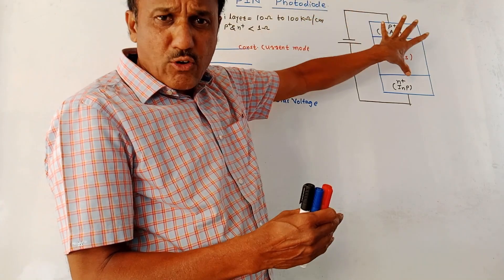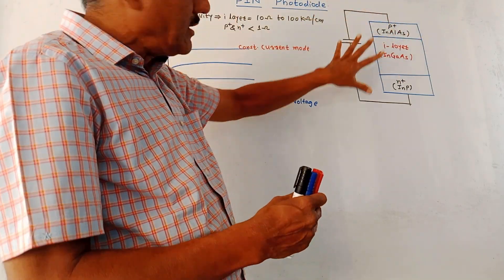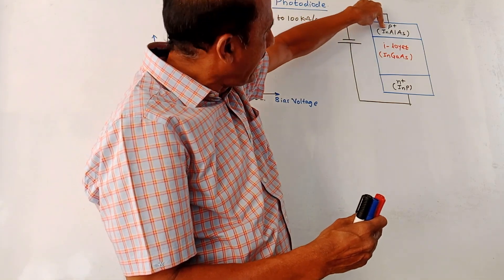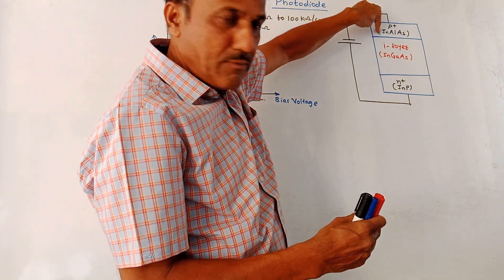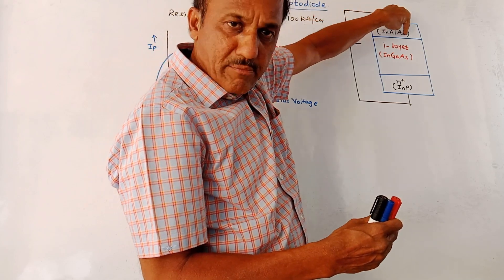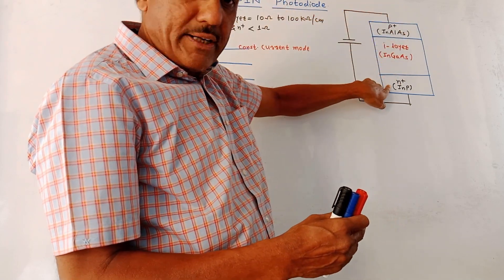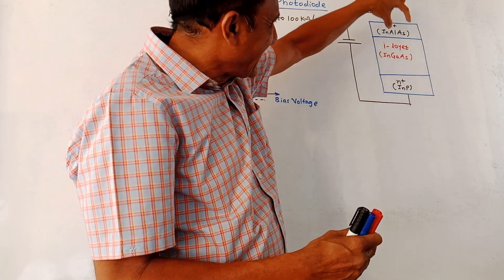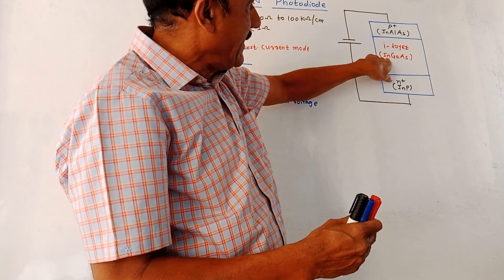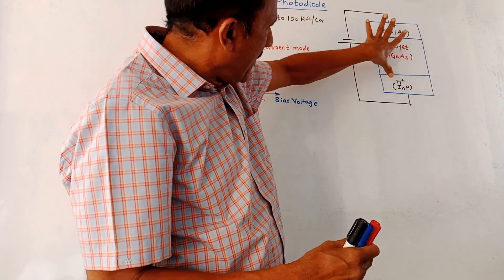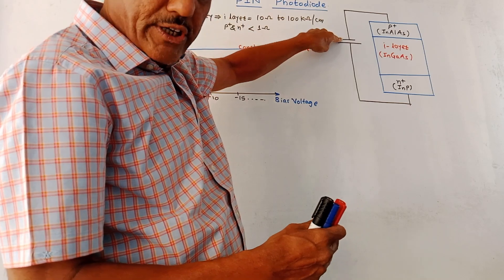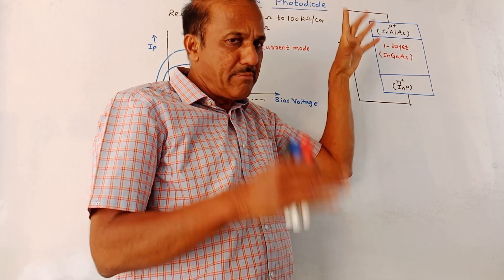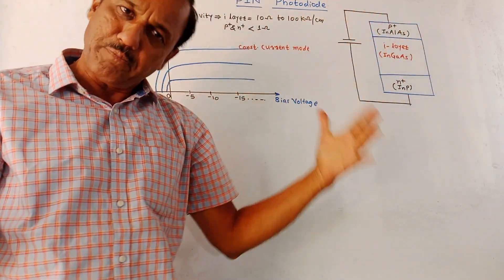The remaining operation is similar to that of the conventional PN junction photodiode. As shown in this diagram, the upper part is the P+ region, formed using indium aluminum arsenide. The lower part is the N+ region, which is indium phosphide. The I layer consists of the material indium gallium arsenide. The P+ is connected to the negative terminal of the battery and the N+ region is connected to the positive terminal, meaning the diode is reverse biased.